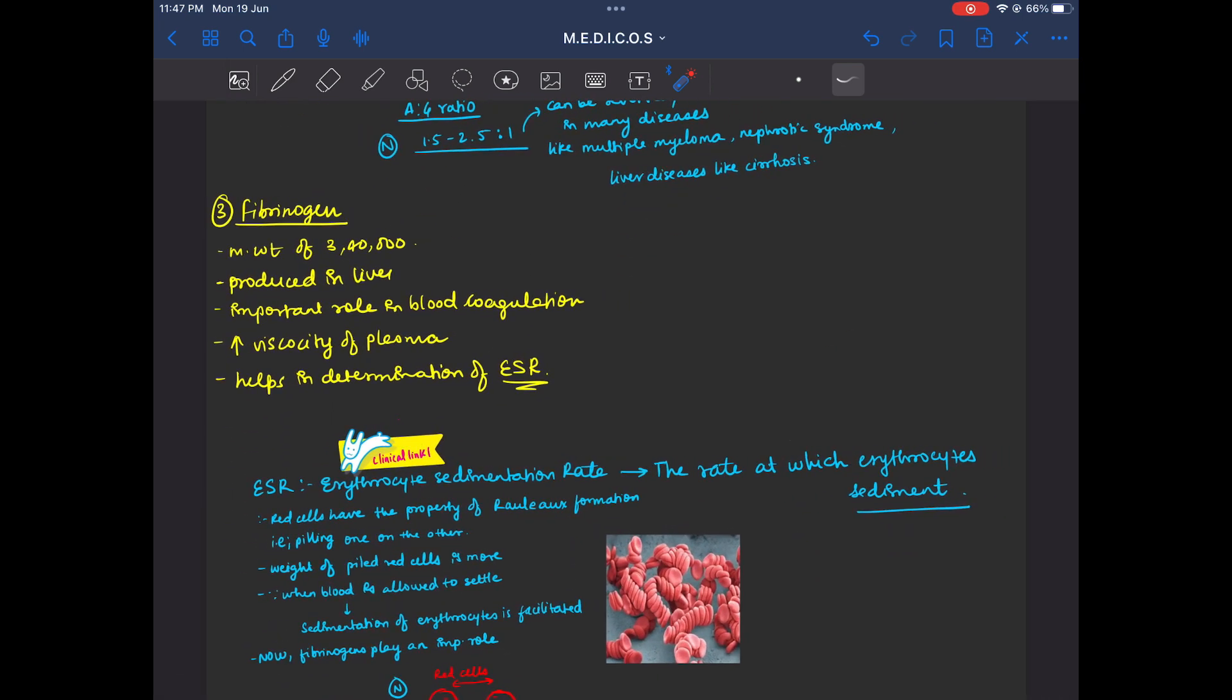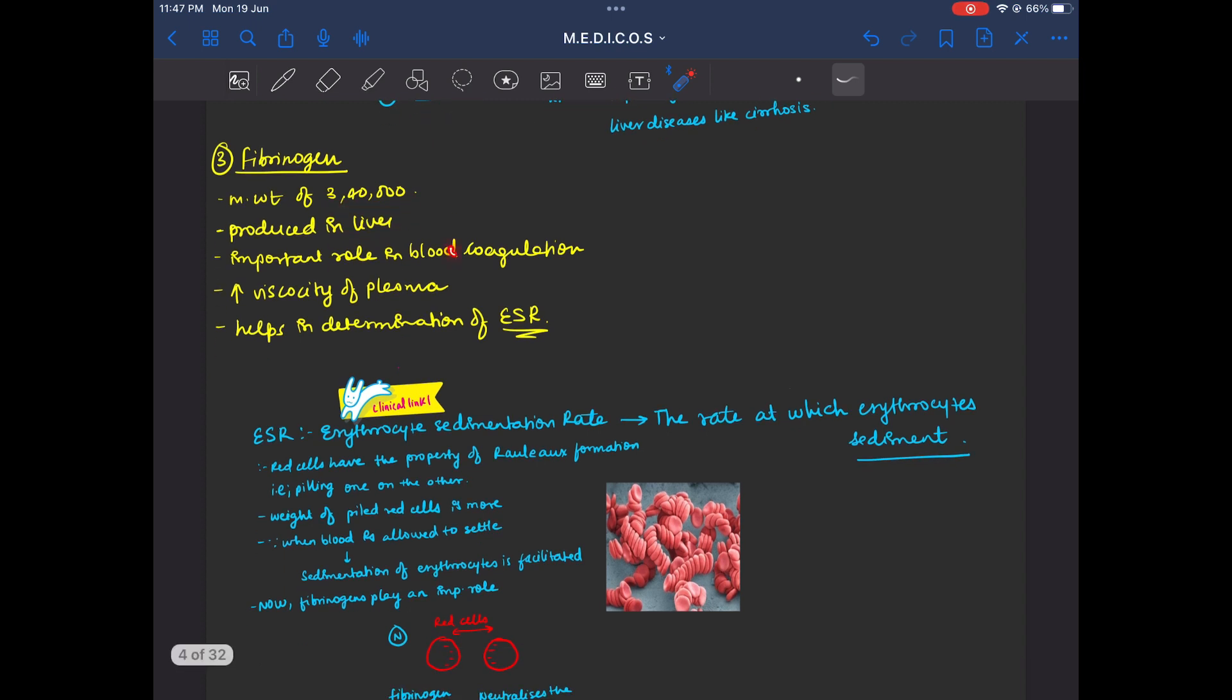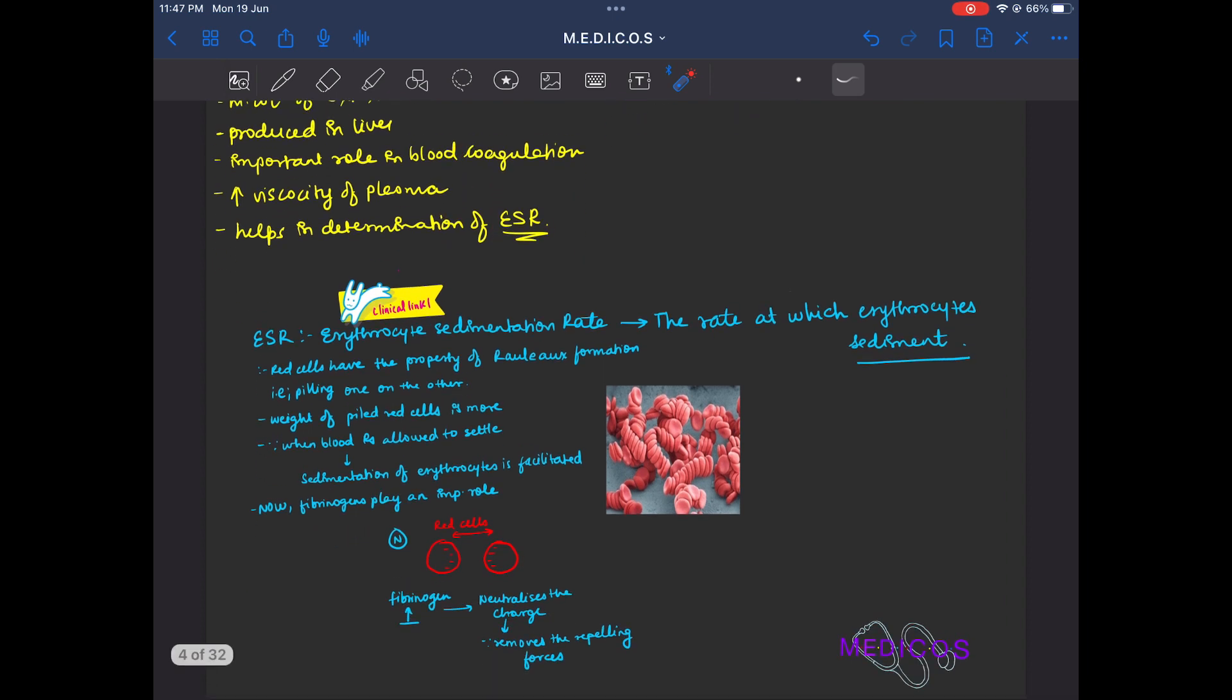Now, fibrinogen. Fibrinogen molecular weight is the most. It is also produced in liver. It helps in blood coagulation, helps in determination of ESR, and helps in increasing the viscosity of plasma.